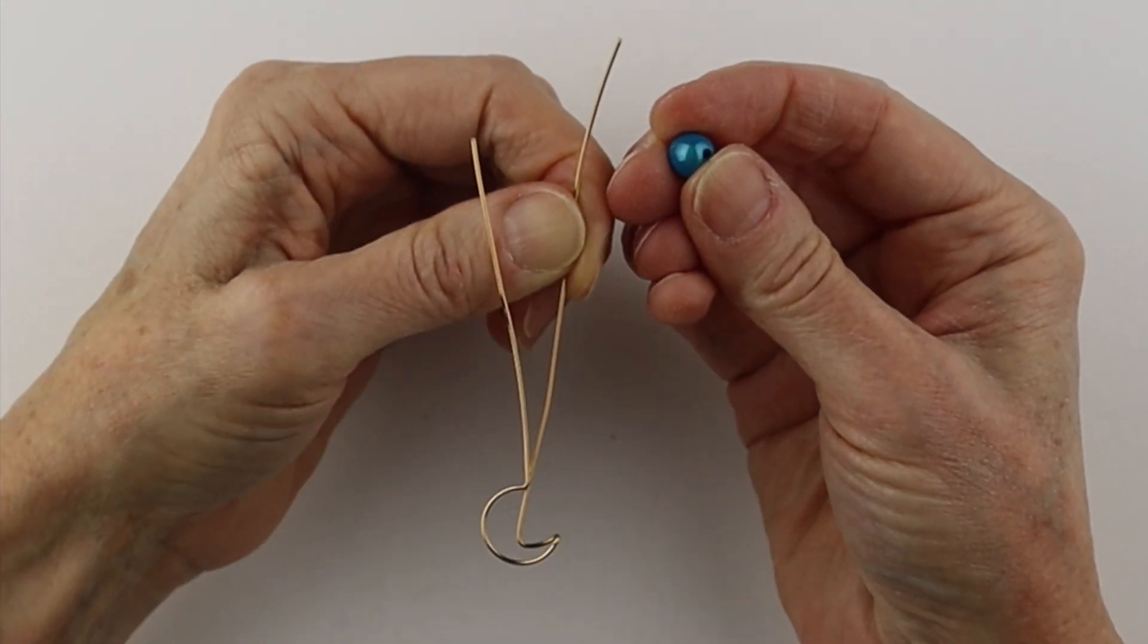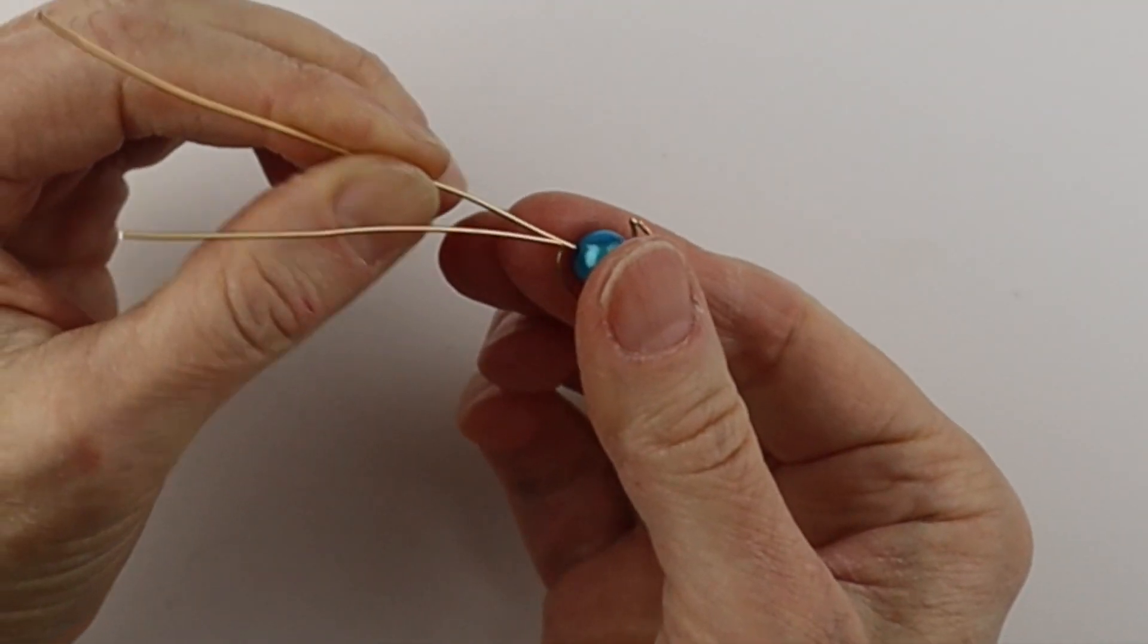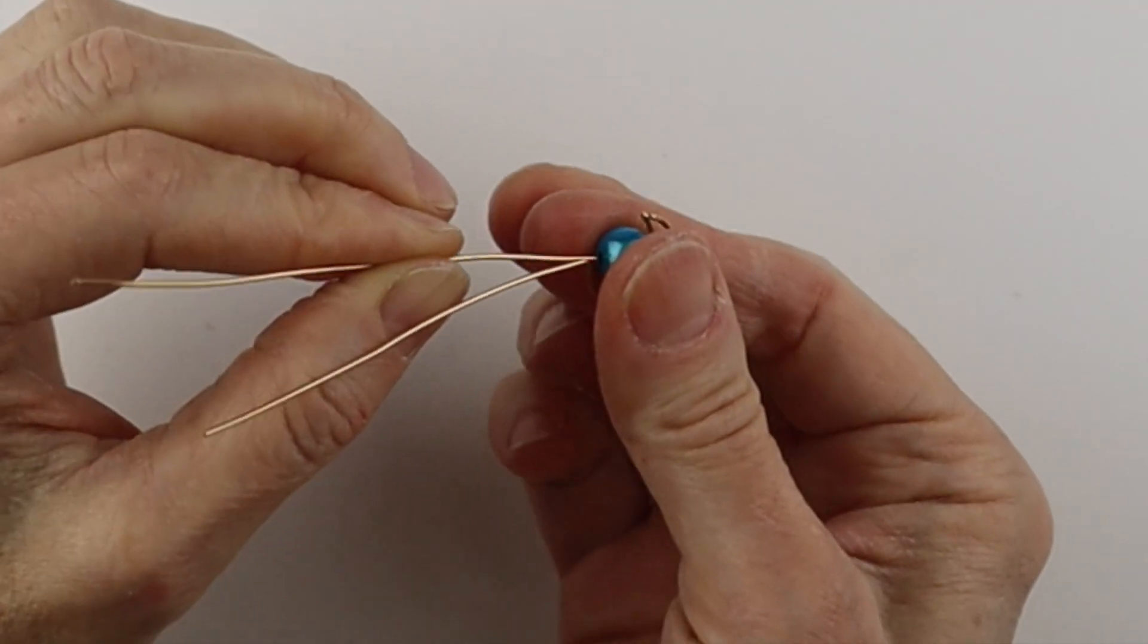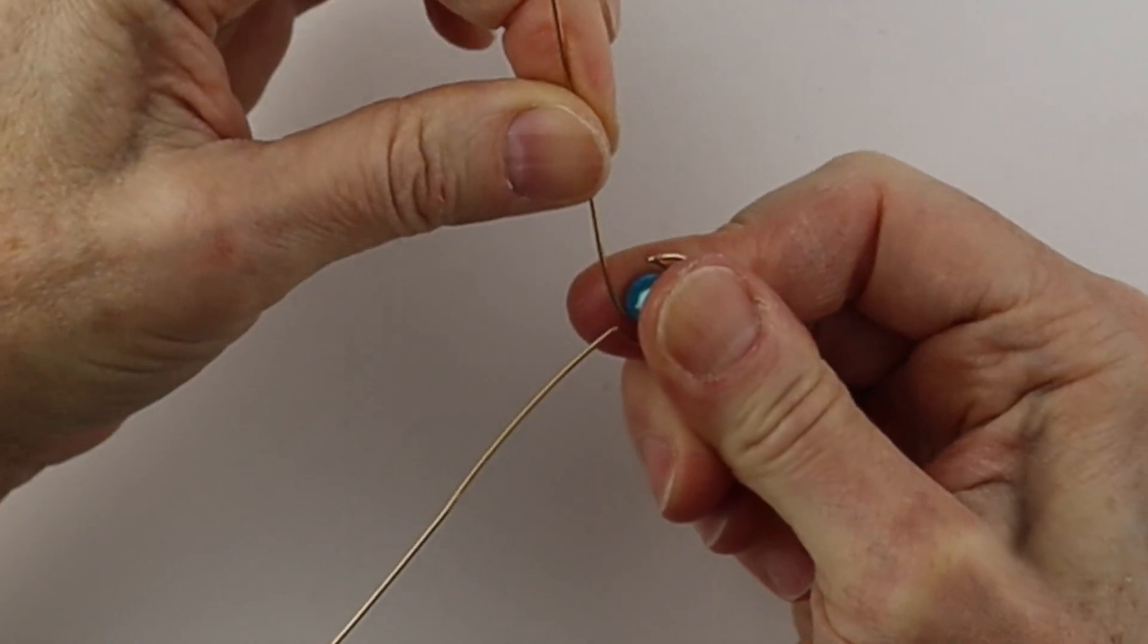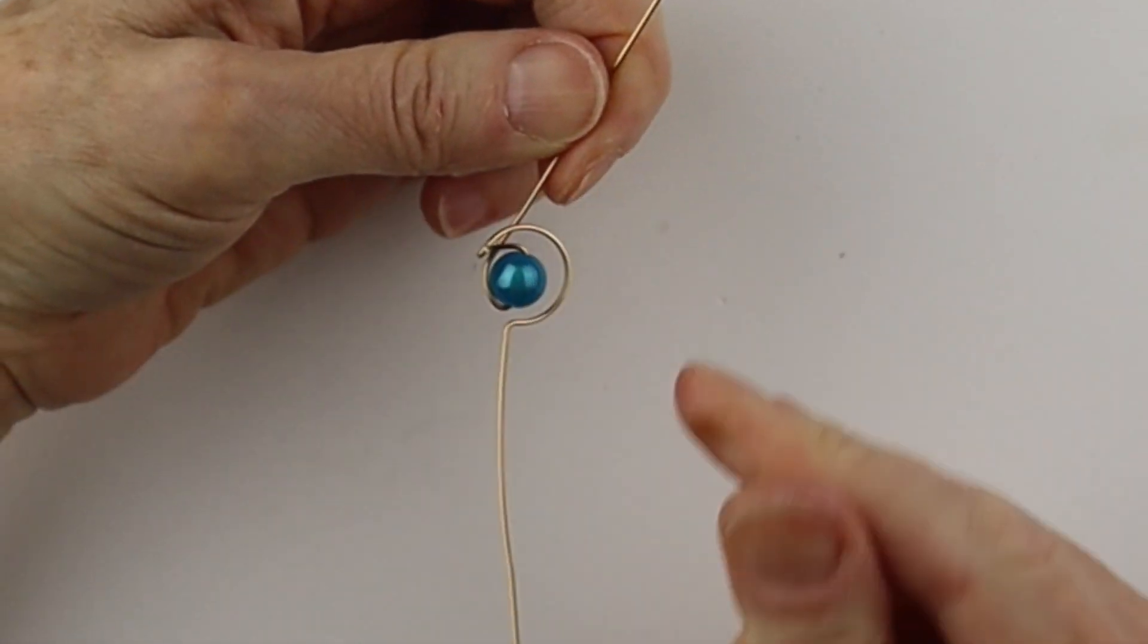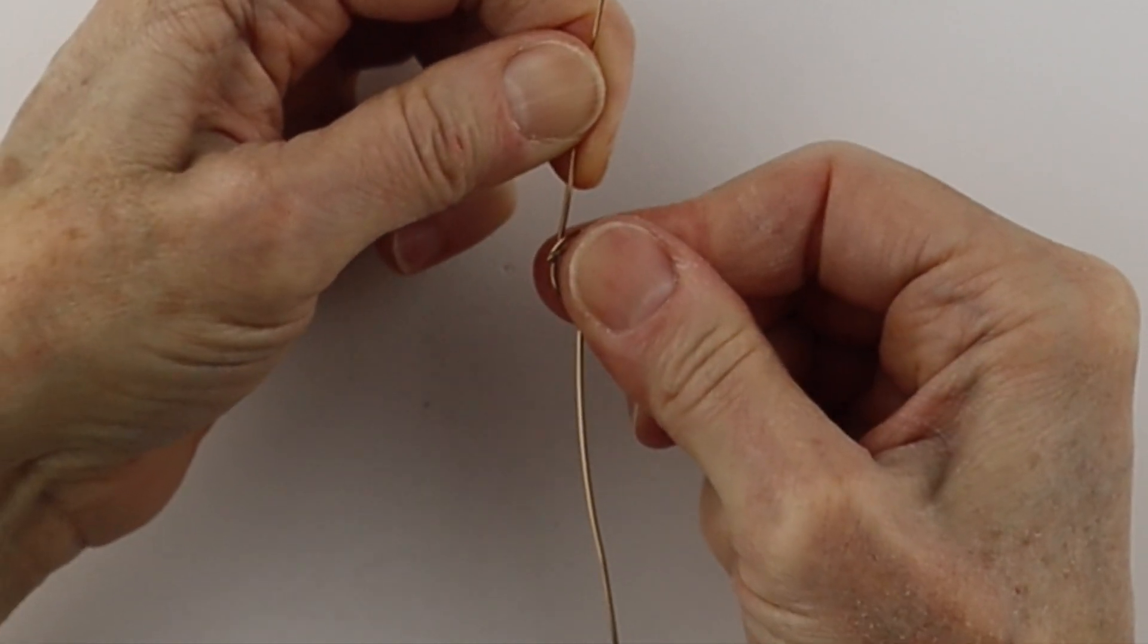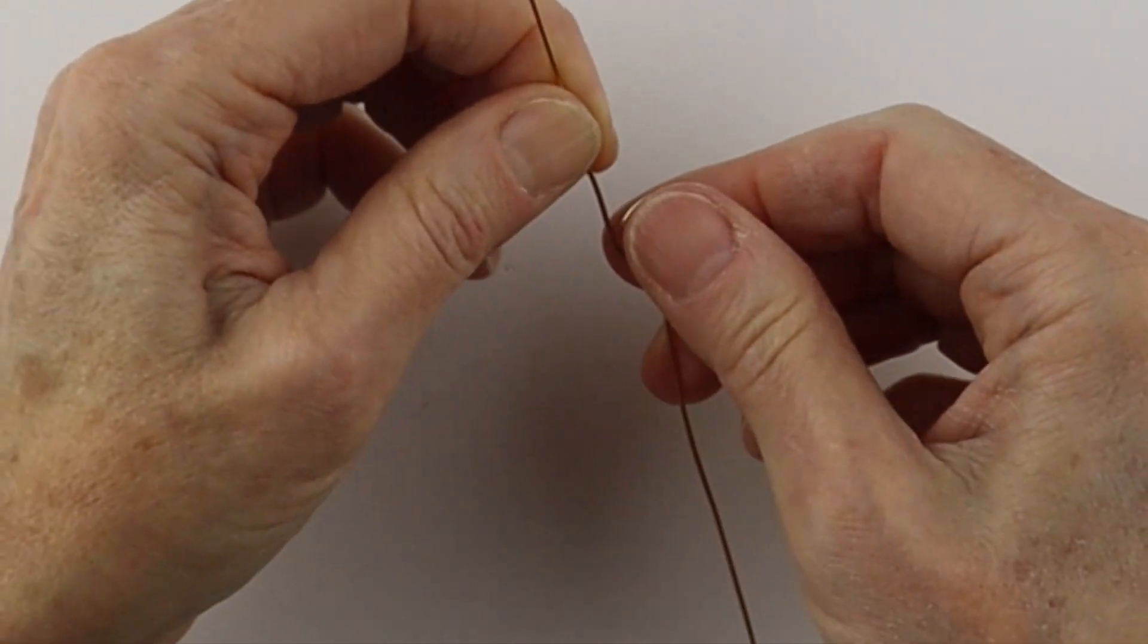And then we'll take our bead, stick it on there, and then we're going to hold the bead with our thumb and our finger and push this around. So we want it to follow the curve of the bead. And then you can actually hold the bead again and just pull it back a little bit, just a teeny bit there.